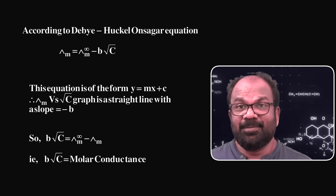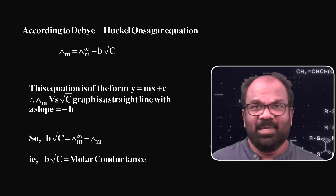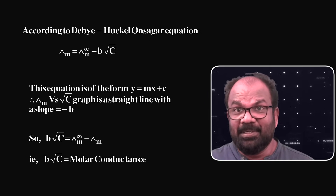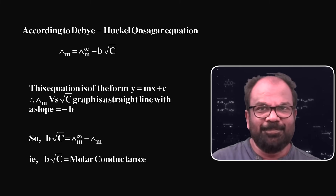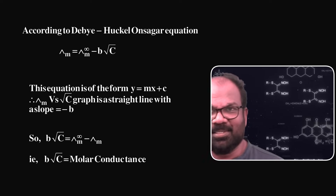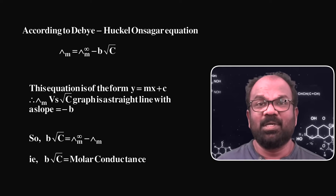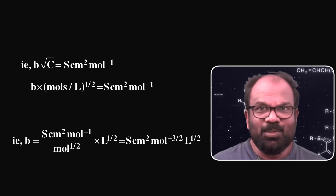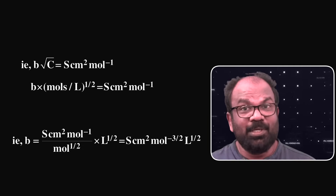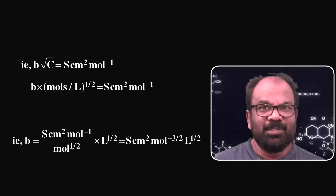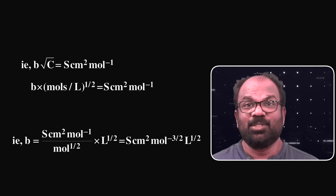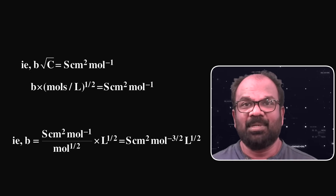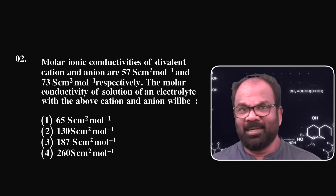We need to find the unit of B. From the Debye-Hückel equation, B√c = λm∞ − λm, so unit of B√c equals unit of molar conductance, which is siemen centimeter square mole raised to minus 1. Therefore, unit of B = siemen centimeter square mole raised to minus 3/2 liter raised to 1/2. The answer is option number 1.